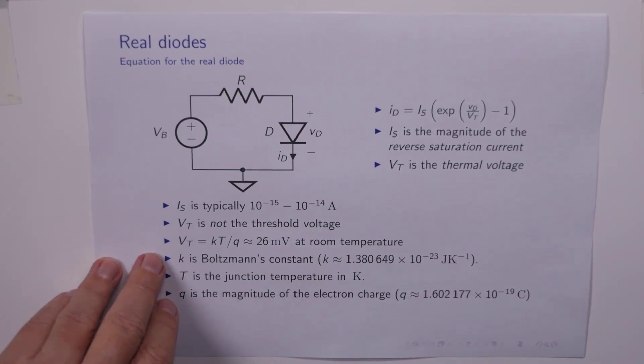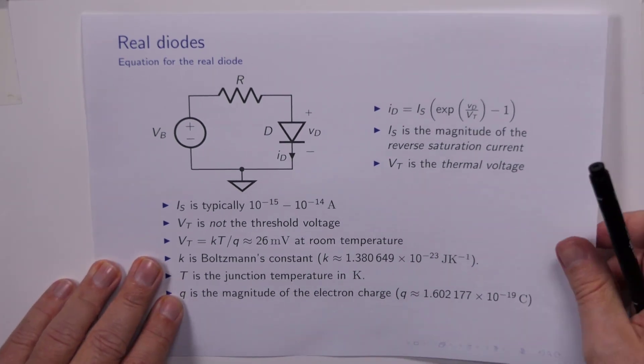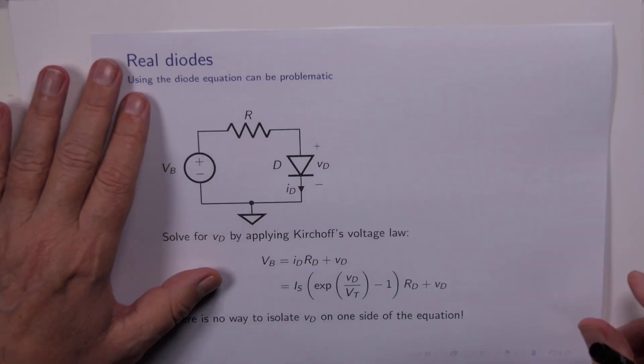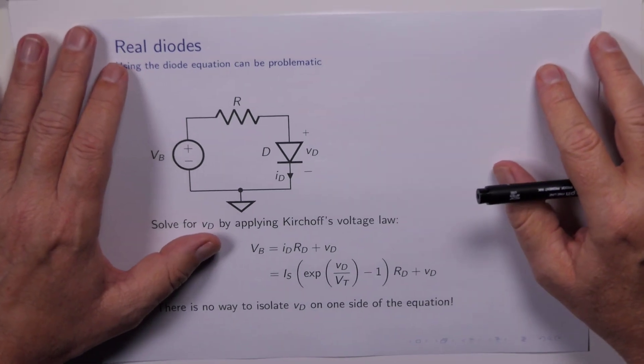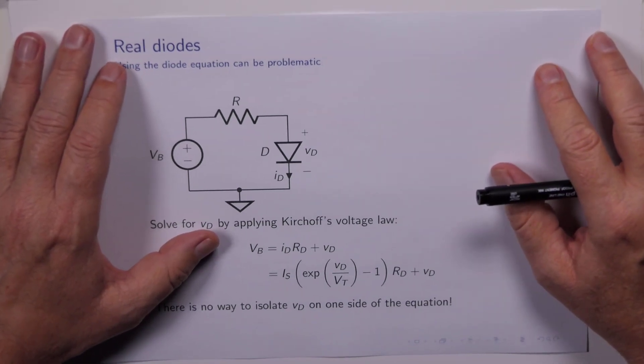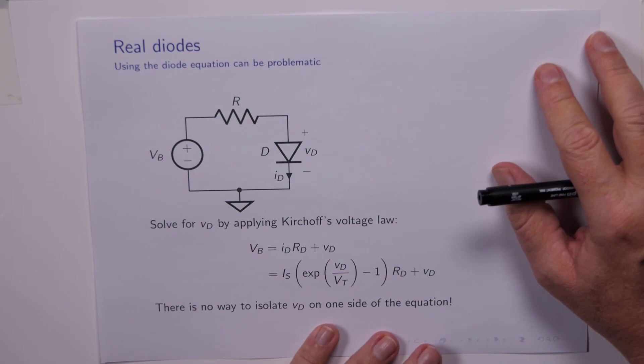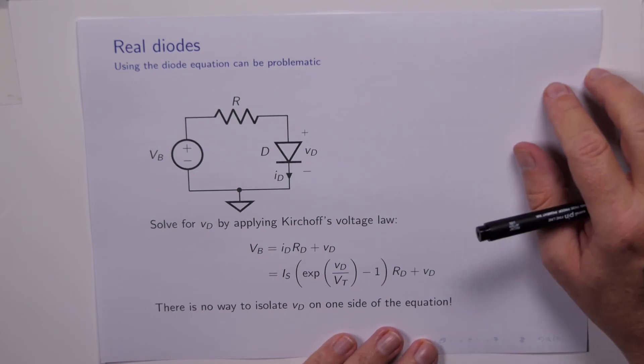Great. So we've got an equation for the diode. That means that we can use it when we're solving circuits, right? Instead of having to figure out is the diode in the conduction region or is it in the blocking region, we can just plug in the equation just like we do for the resistor.